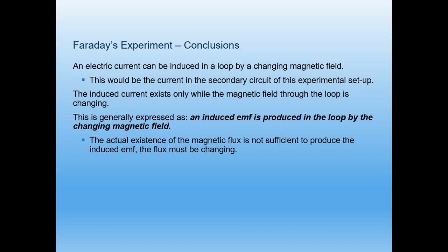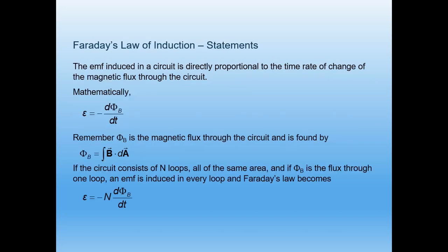An electric current can be induced in a loop by a changing magnetic field. The induced current exists only while the magnetic field through the loop is changing. The actual existence of magnetic flux is not sufficient to produce induced EMF — the flux must be changing. Faraday's law of induction states that the EMF induced in a circuit is directly proportional to the time rate of change of magnetic flux, ε = −dΦ_B/dt.